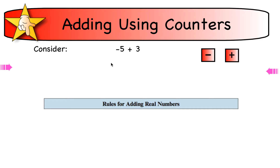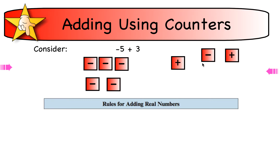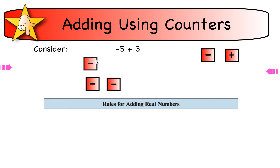Another way we can model addition of positive and negative real numbers is to use counters. If I have negative five plus three, I take five negative blocks and three positive blocks. Each plus and each negative cancel out, so three pairs cancel, and I'm left with two negatives. The answer is negative two.